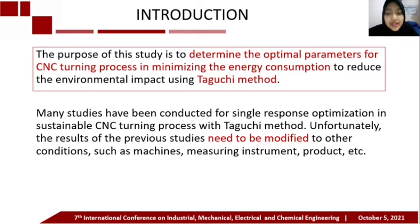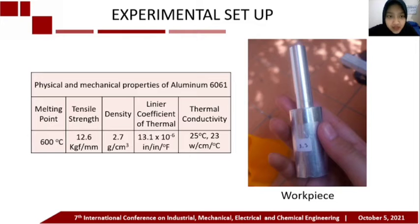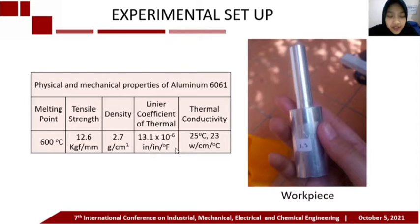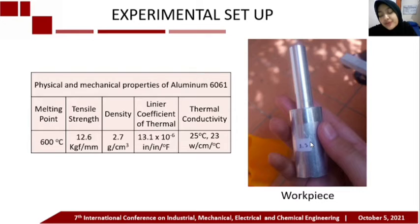You can see the physical and mechanical properties of aluminum 6061, including melting point, tensile strength, density, linear coefficient of thermal expansion, and thermal conductivity. Here is an example of the workpiece we chose for the experiment.